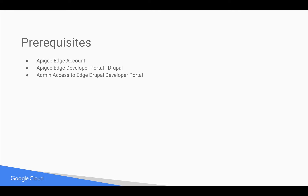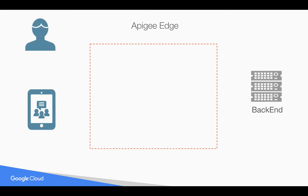Prerequisites for this video: you need an Apigee Edge account, which you can register at apigee.com/edge. You should also have access to the Apigee Edge Drupal developer portal as an administrator. Let's take a simple use case — a developer or partner who would like to access your APIs, which are exposed using the Apigee Edge platform.